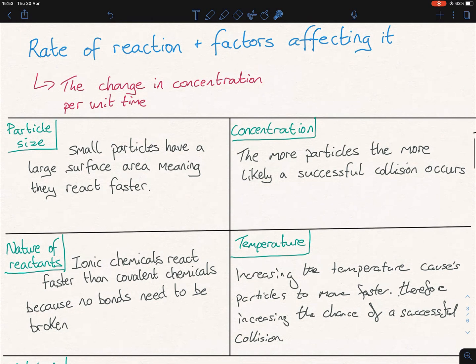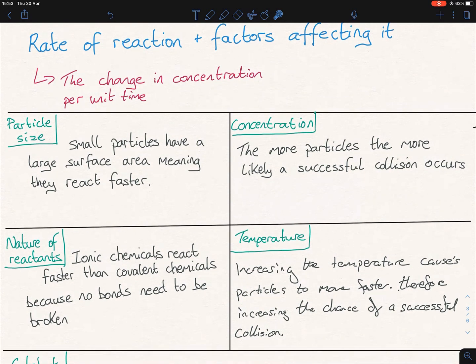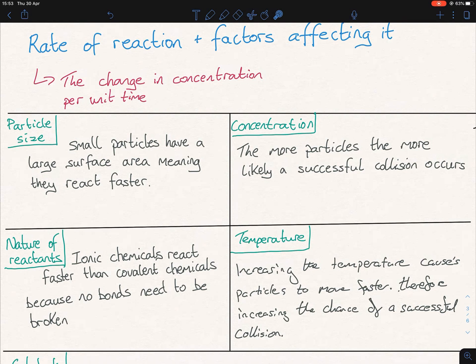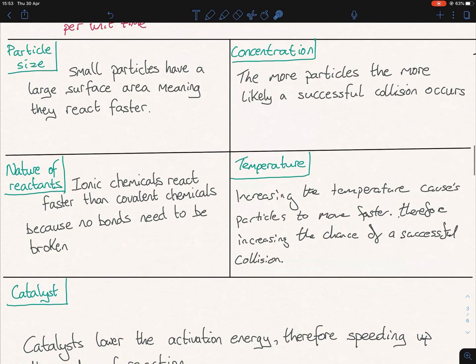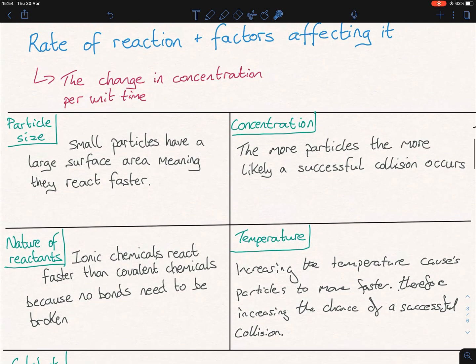This is a big part of the topic. The rates of reaction and the factors affecting them. First off, what is the rate of reaction? It is the change in concentration per unit time. You need to know that definition off by heart — word perfect. The change in concentration per unit time. That's really important. Now, there are five factors affecting it — I have four here, and a catalyst underneath that I'll discuss in a second.